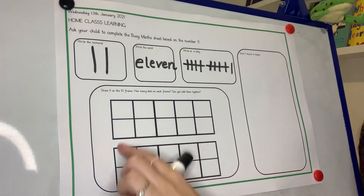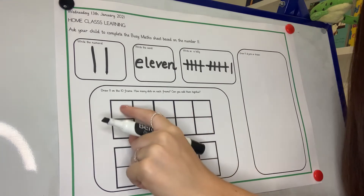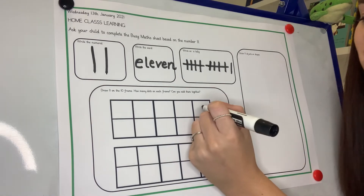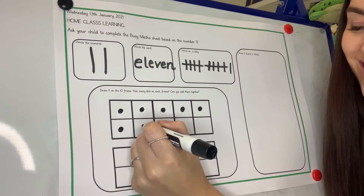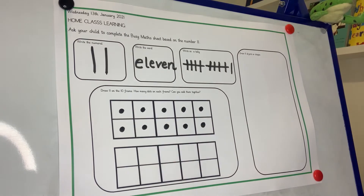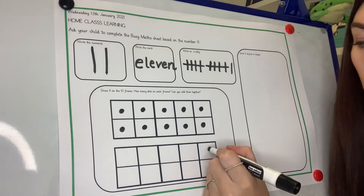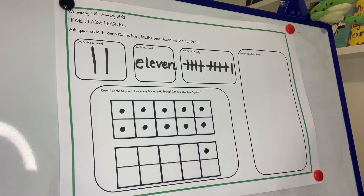Have a look at my tens frame here. I want to show the number 11. I know that when I have a full tens frame, I have 10. Watch me draw my 10 on my tens frame now: 1, 2, 3, 4, 5, 6, 7, 8, 9, 10. But I want to show 11. So how many more will I need to draw on my tens frame to show 11? I've already done 10. Good — just like the tally, I need one more. 10 and one is 11. Super work everybody.